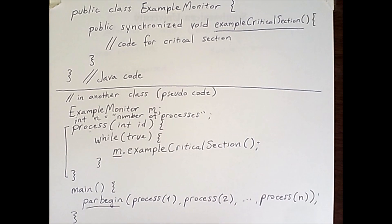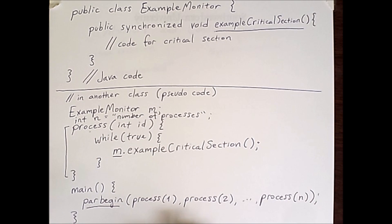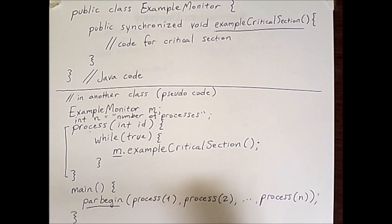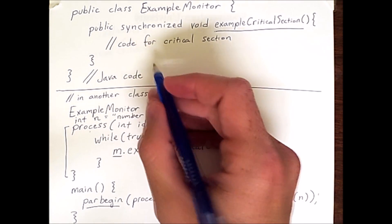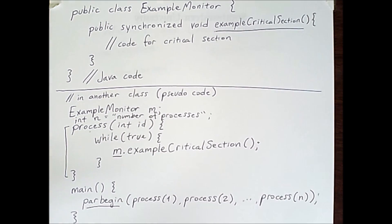This example only provides mutual exclusion. To have synchronization, we need condition variables. Unfortunately, although Java does have condition variables, they're not implemented as seamlessly as the synchronized method, so this is going to devolve into more pseudocode.